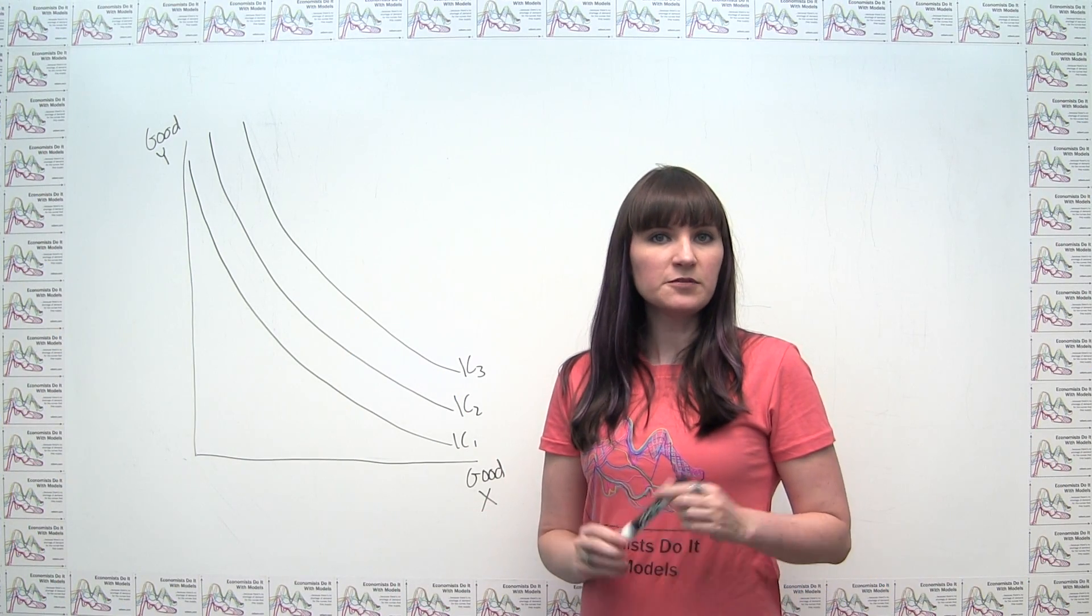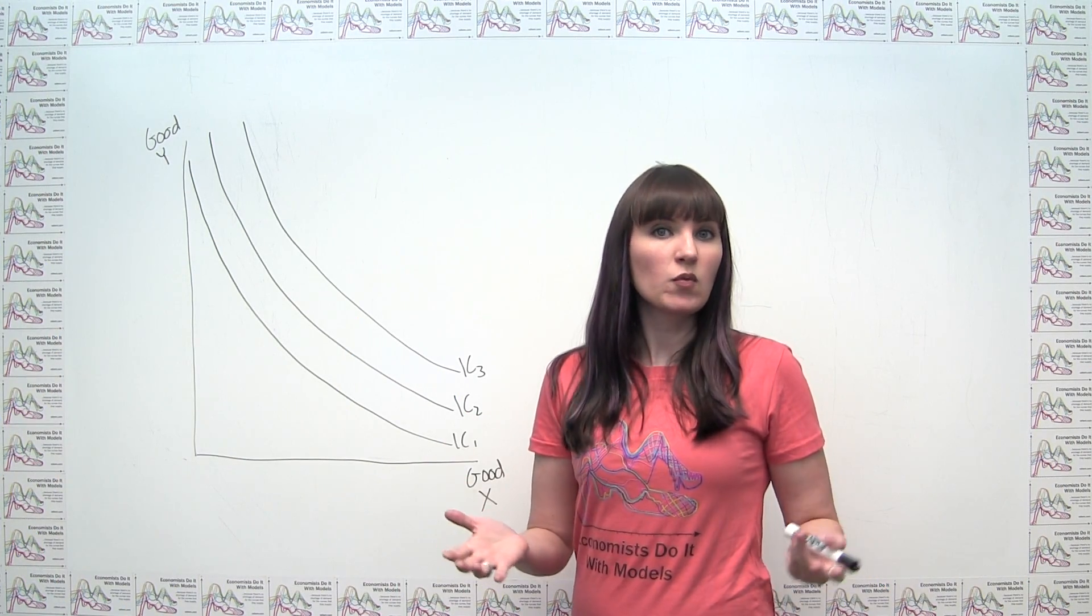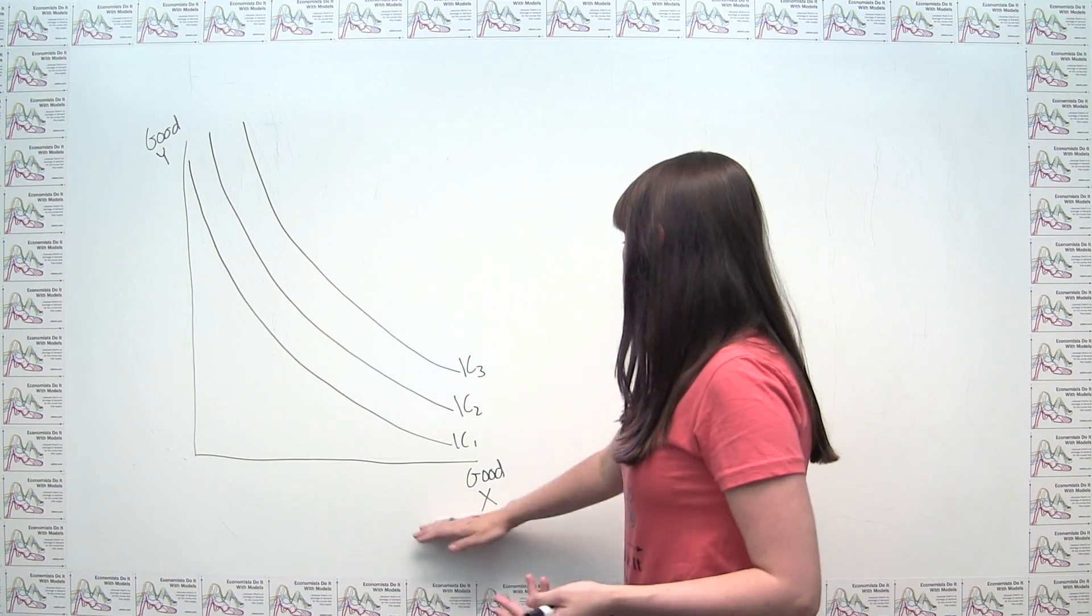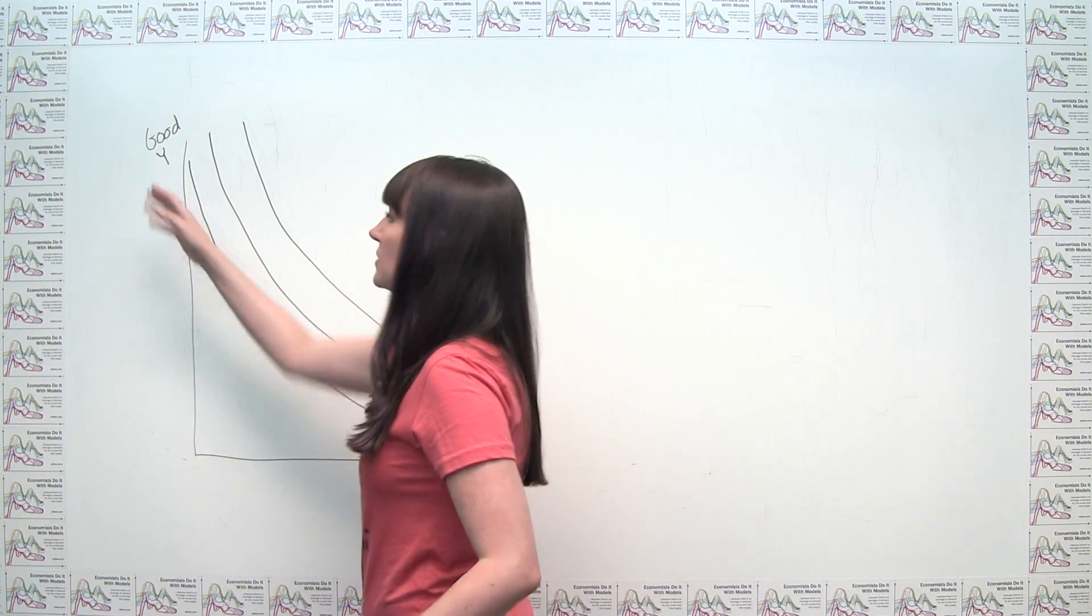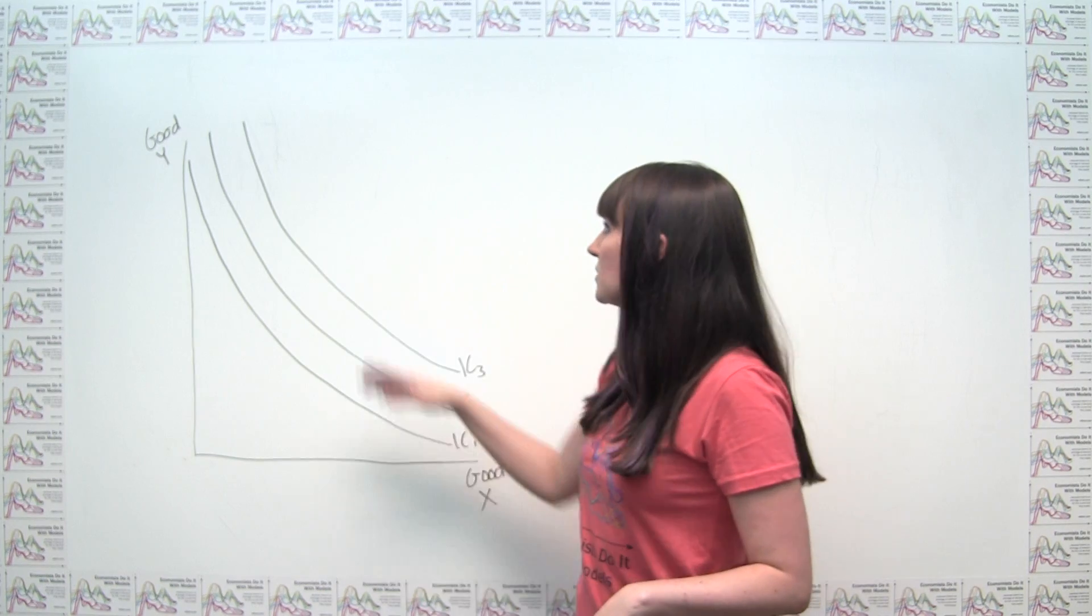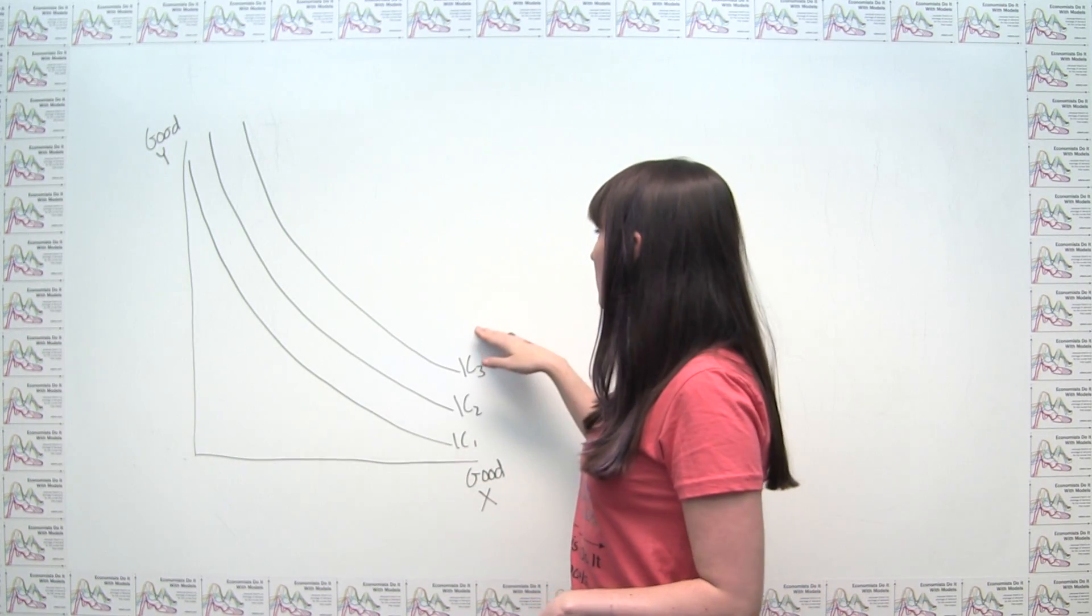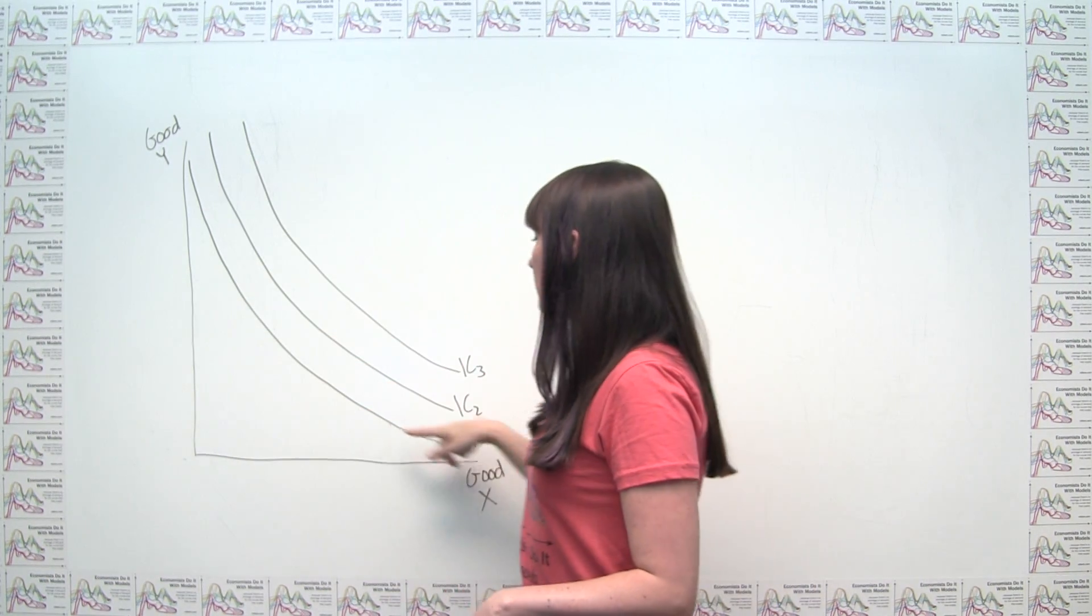When we introduced the concept of indifference curves, we said that they have a number of properties. At least when we're talking about two economic goods as opposed to economic bads, indifference curves slope downwards, they tend to be bowed into the origin